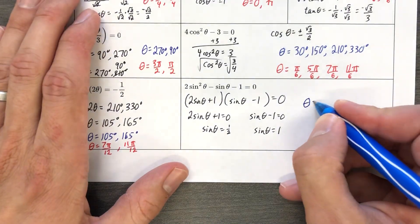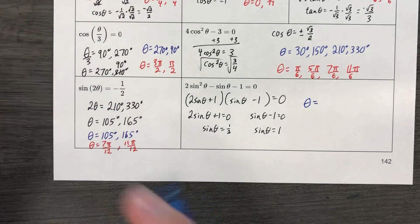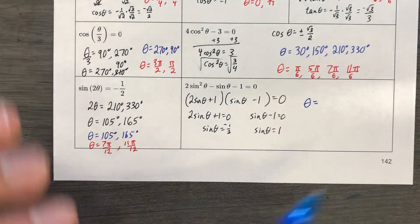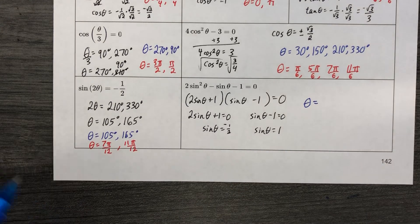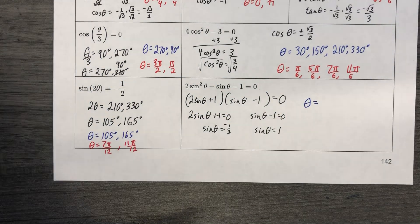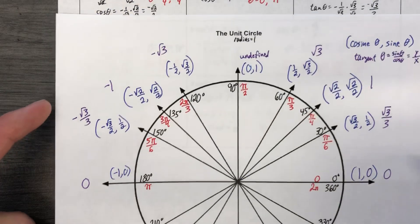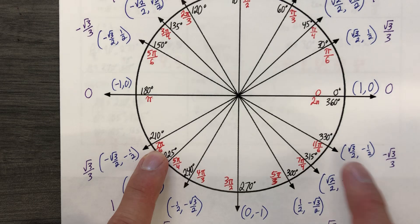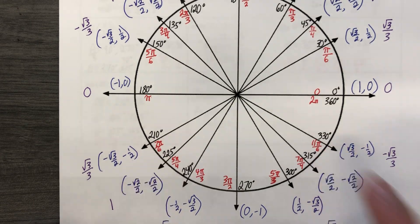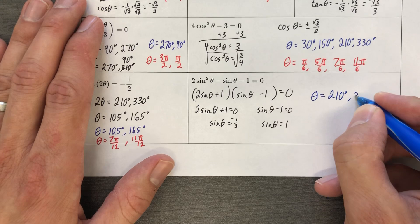All right. We're going to find everywhere that the y value, sine, is equal to negative 1 half. There we go. Fixed it. Negative 1 half or positive 1. All right. Sine is negative 1 half. Where's my unit circle? Sine is negative 1 half. The y value is negative 1 half here and here. So 2 10, 3 30. 2 10, 3 30.